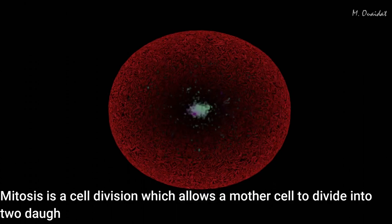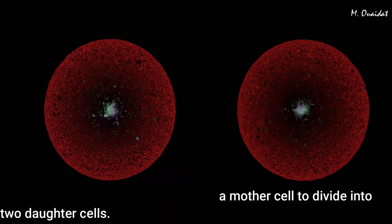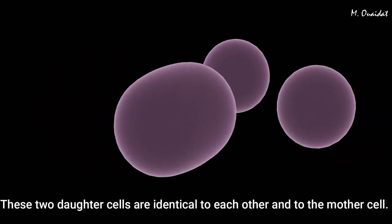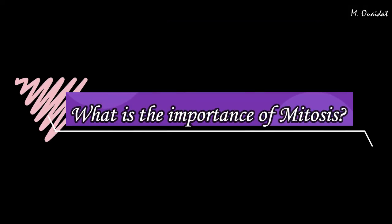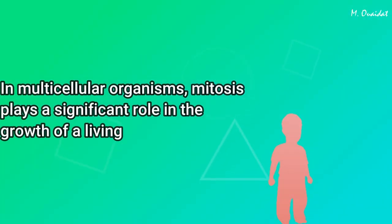Mitosis is a cell division which allows a mother cell to divide into two daughter cells. These two daughter cells are identical to each other and to the mother cell.